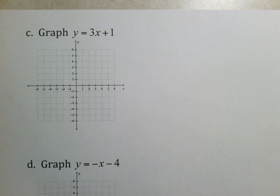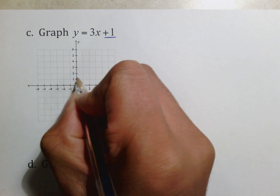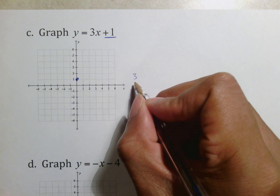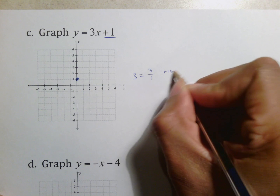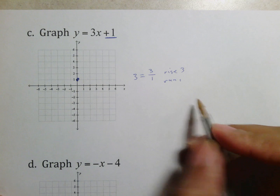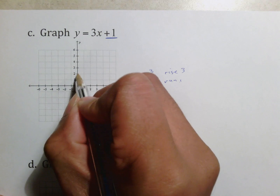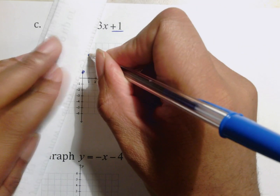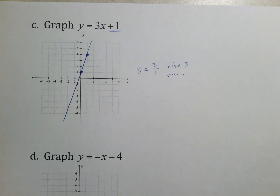For notes it doesn't matter, but for tests and quizzes use your straight edge. Graph y equals 3x plus 1. B is 1, so my y-intercept is 1 — go on the y-axis to where 1 is. My slope is 3. As a fraction, that's 3 over 1, which means rise 3, run 1. From the y-intercept, go up 3 over 1, put the second dot, get your straight edge, and draw your line all the way outside the grid for full credit.